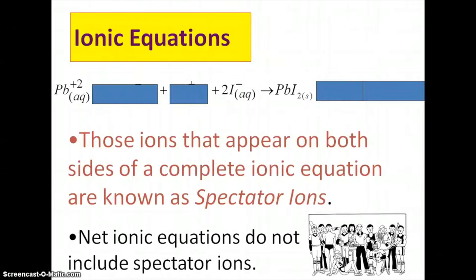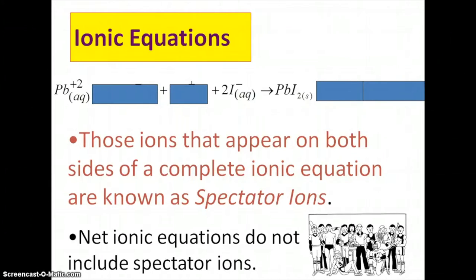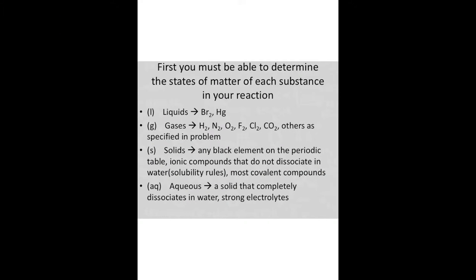So you cross out the things that are on the same side — we've got 2 NO3, 2 K, 2 K, 2 NO3 — those all get covered up. In order to do that, you have to first be able to tell what state of matter everything is in. On my periodic table, the blue elements are going to be our liquids — bromine and mercury. The red elements are going to be our gases: hydrogen, nitrogen, oxygen, fluorine, chlorine, CO2. The noble gases are also gases, but they usually don't react because they're noble — they don't want to react with anybody.